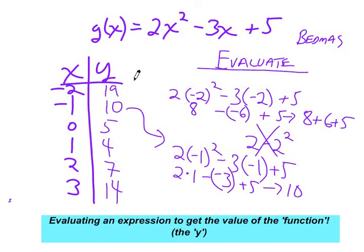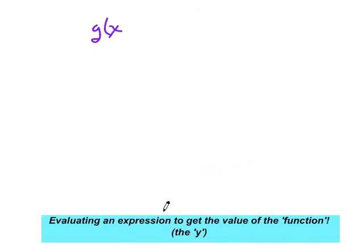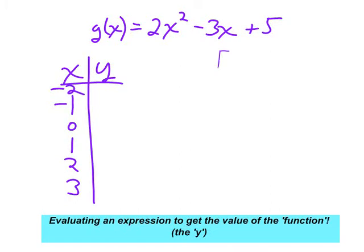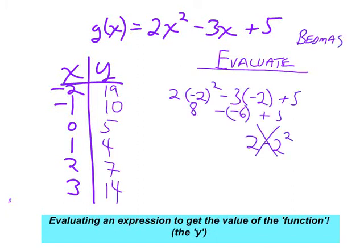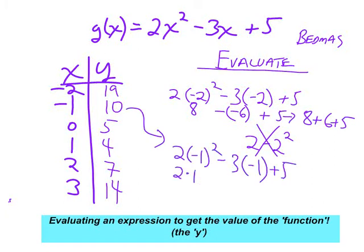Here's g of x — a different machine, a different function, so I give it a different name. It's called the g function: g of x. It takes 2 times the square of x, then takes away 3x, and adds 5. It could be grandma's secret recipe for muffins, the distance it takes your car to stop on a slippery surface — it's some relationship between numbers. I'll just let this evaluate. Make sure you get the same answers I did.